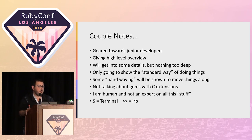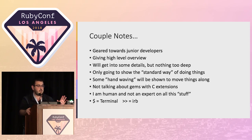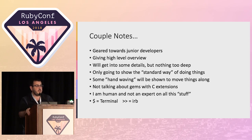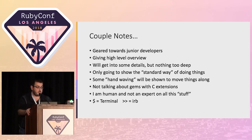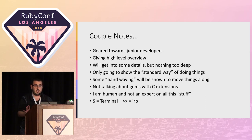A couple of quick housekeeping notes. This is more geared towards junior developers and it's going to be somewhat high level — some hand waving will happen. Little bits of detail will be dug into, but it's mostly a general idea of how gems are constructed. We're going to talk about pure Ruby gems only — no C extensions, nothing about JRuby, just plain old Ruby gems.